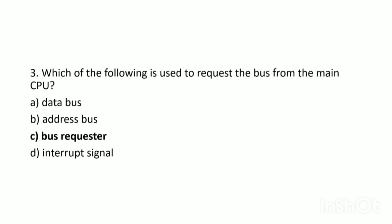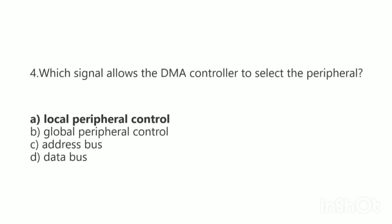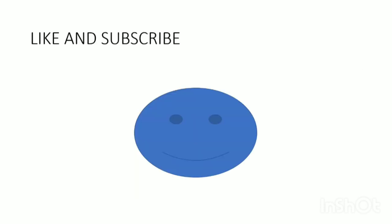Question 3: Which of the following is used to request the bus from the main CPU? The signal name is Bus Request, and the device asserting it is called the Bus Requester. The permission is given through the Bus Grant signal. So the two important signals are Bus Request and Bus Grant. Question 4: Which of the following allows the DMA controller to select the peripheral? The correct answer is Local Peripheral Control, which helps choose or select the particular peripheral.